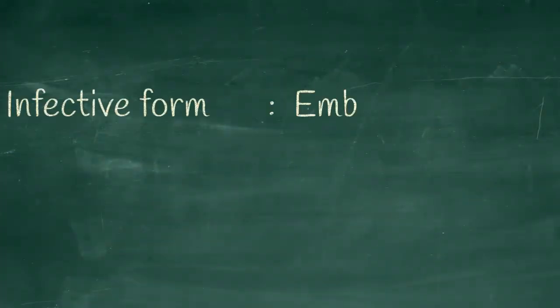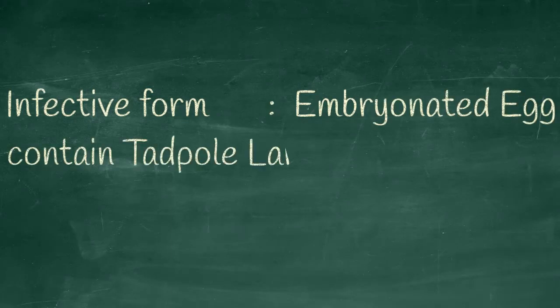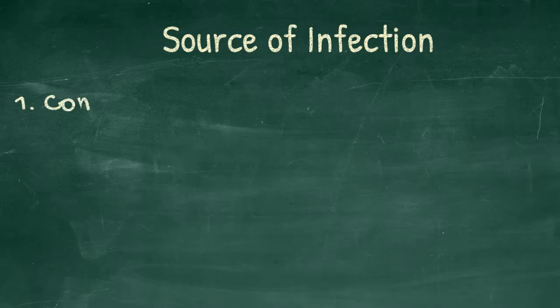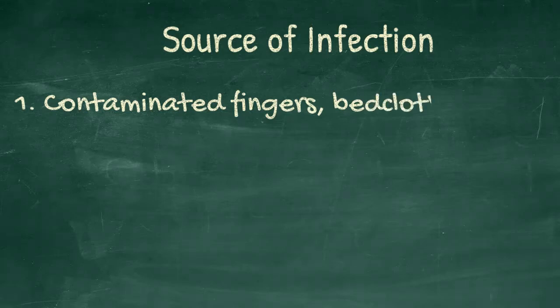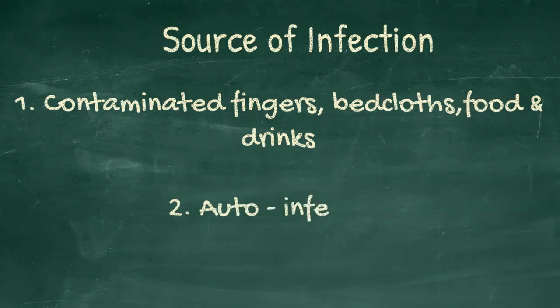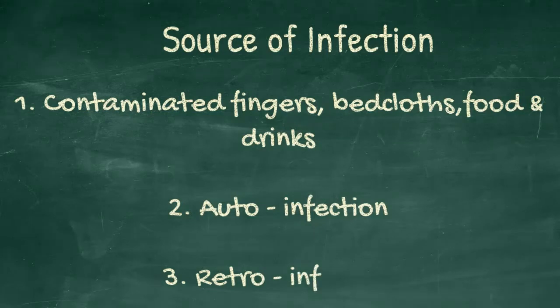Life cycle. Infected form: embryonated egg containing tadpole larva. The source of infections are contaminated fingers, bedcloth, food and drinks. Auto-infection which means a person can reinfect themselves from their own. Retro-infection which means mature egg with larvae hatches in anal area and migrate into the large intestine to become the mature worm.